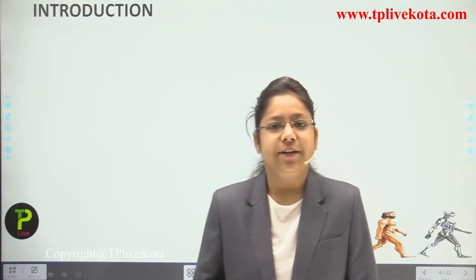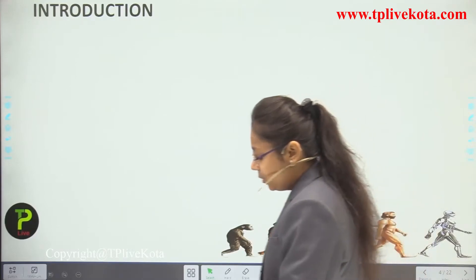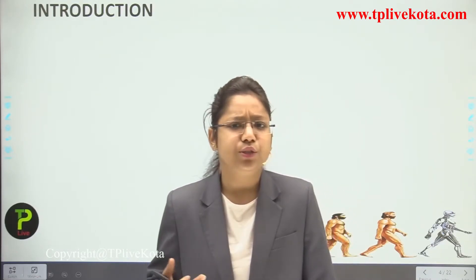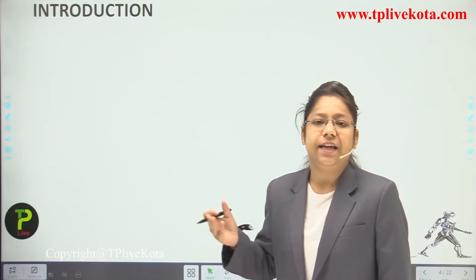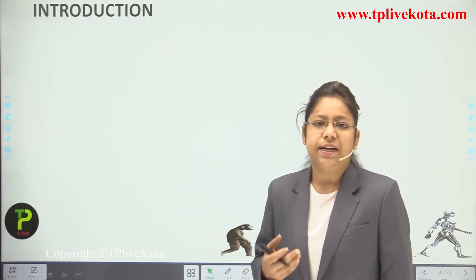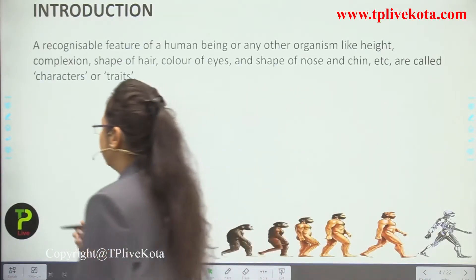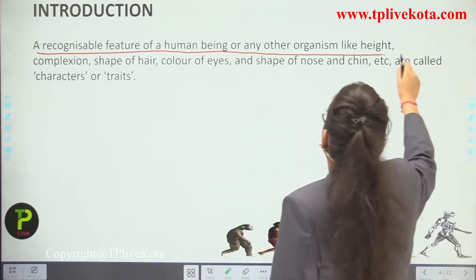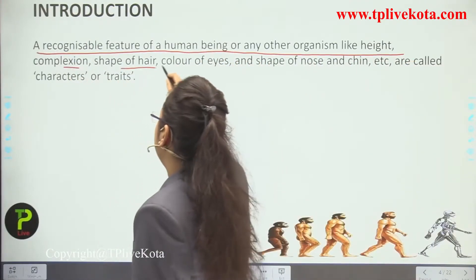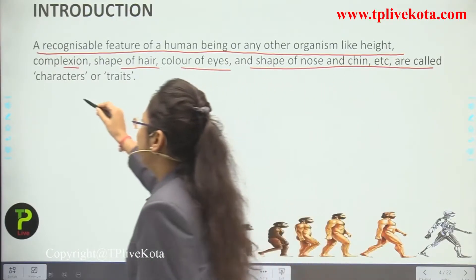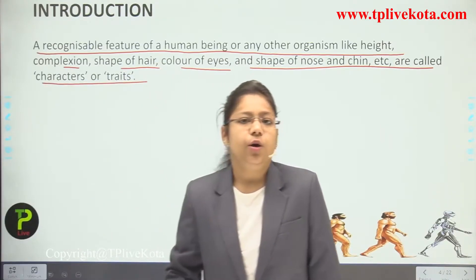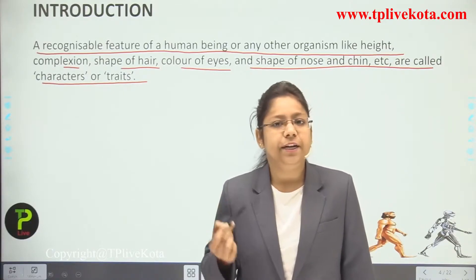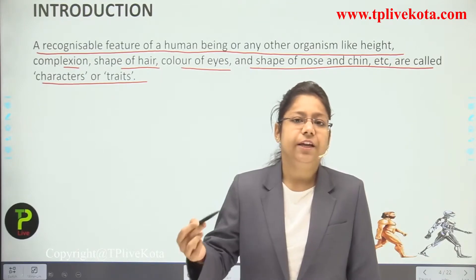We are moving towards the introductory part of this chapter to become familiar with different terms. The first point: a recognizable feature of a human being or any other organism — like height, complexion, shape of hair, color of eyes, and shape of nose and chin — is called a character or trait.